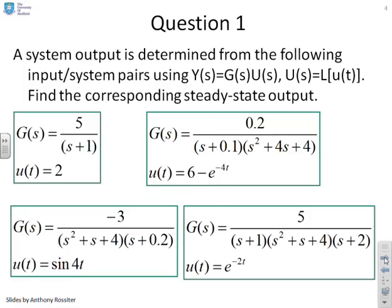Question one: a system output is determined from the following relationship Y=G times U. We're going to assume U(s) is the Laplace of u(t), and we want you to find the corresponding steady-state output, i.e., y(t) or the limit of y(t) as t goes to infinity. You can see there are four questions here. So pause this video and attempt those. I will now continue and go through some possible solutions.